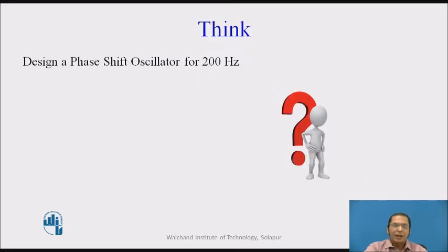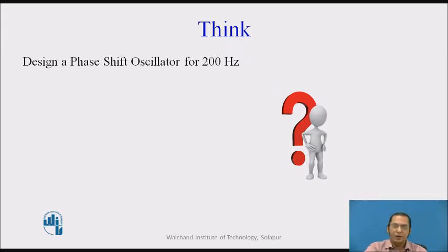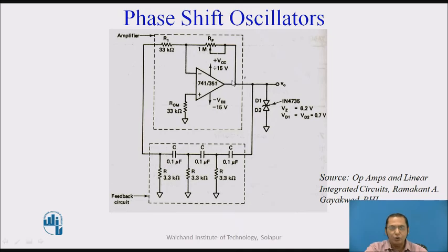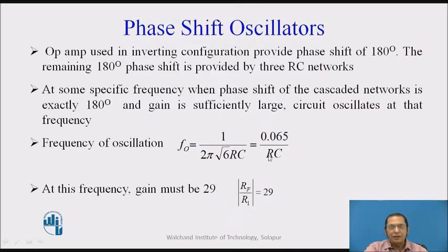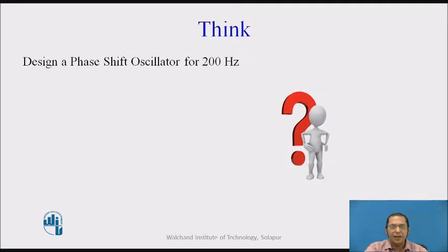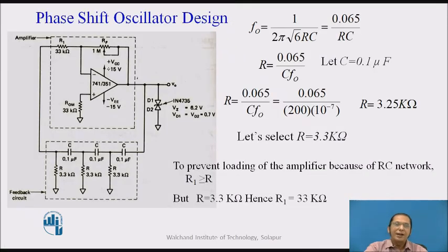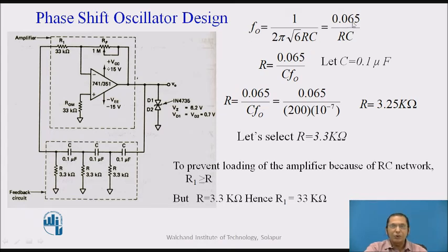Now, here is a design question: design a phase shift oscillator for 200 Hz. We already know the circuit and the various equations, and using these equations the oscillator can be designed. The frequency of oscillation formula is F₀ = 0.065 / RC.